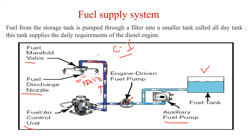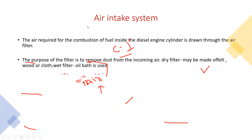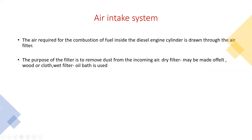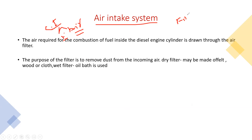The next component is the air intake system. Air intake system: as you know that in a diesel engine, a compression engine is used. In a compression engine, we require air plus fuel. For the purpose of air, we consider this air intake system — we take air from the atmosphere. After the extraction of air, it passes through the filter. The function of the filter is to reduce impurity — whatever dust is present in the air — and then it is injected into the diesel engine.